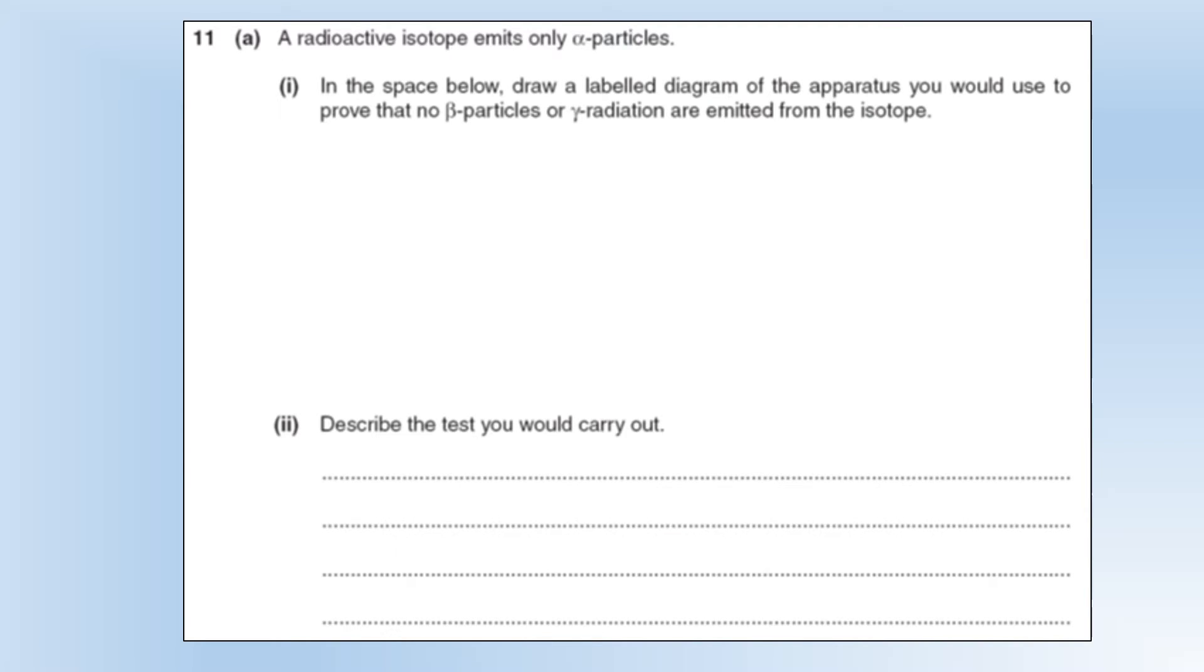So a radioactive isotope emits only alpha particles. In the space below, draw a labelled diagram of the apparatus you would use to prove that no beta particles or gamma radiation are emitted. Okay, so what we'd need is essentially all of this equipment.